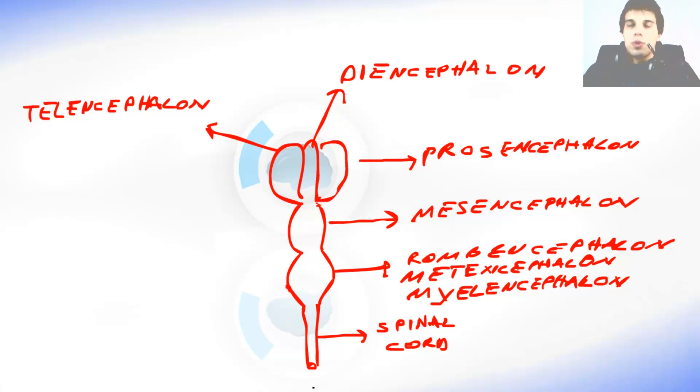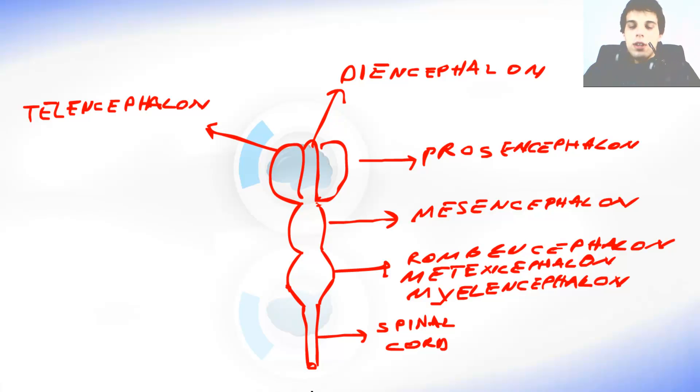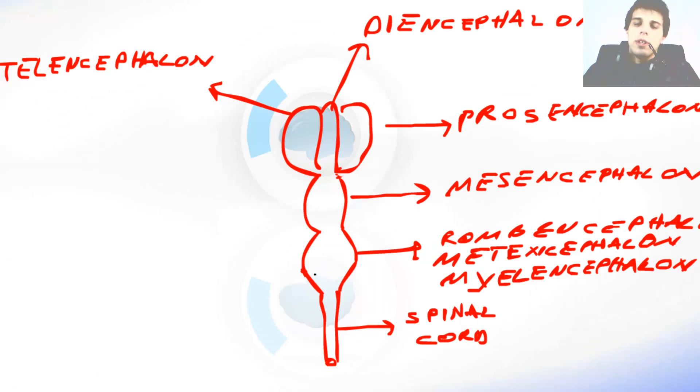So we have this tube-shaped structure created out of ectoderm that develops into this type of structure that looks like three vesicles one after another. After this I will draw you this a bit more in detail with Photoshop just to give you an example and good understanding of how it looks like.